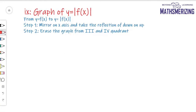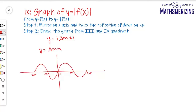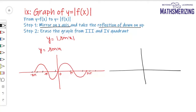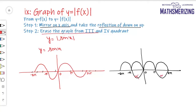The ninth transformation is: from the graph of y = f(x), draw the graph of y = |f(x)|. For example, draw y = |sin x|. The basic graph is y = sin x. There are two steps: first, place a mirror on the x-axis and take the reflection of the lower part upward. Then erase the graph from the third and fourth quadrant. That is the graph of y = |sin x|.